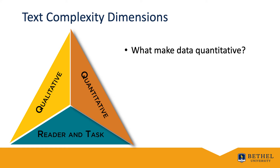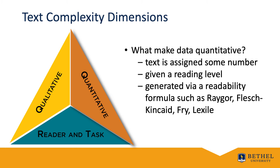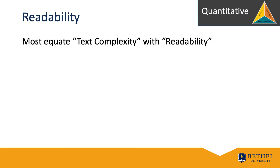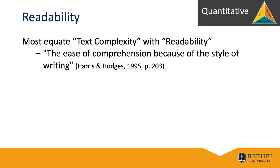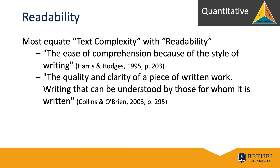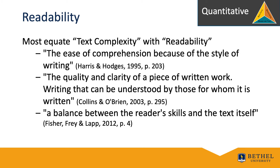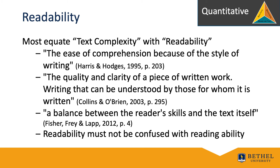What makes data quantitative? In regard to the quantitative dimension of text complexity, the text is assigned a number — given a reading level. This is generally generated via a readability formula such as Rager, Flesch-Kincaid, Fry, or Lexile. Readability is defined as the ease of comprehension because of the style of writing — the quality and clarity of a piece of written work that can be understood by those for whom it is written. A balance between the reader's skill and the text itself, according to Fischer, Fry, and Lapp in 2012. But we simply must not confuse readability with reading ability.